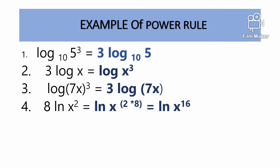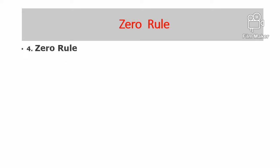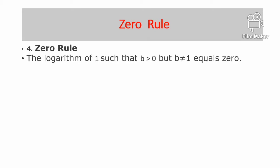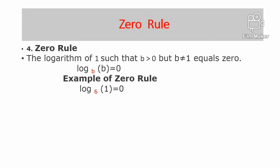Number 4: Zero Rule. Logarithm of x squared equals 0, where b is not equal to 1, it equals 0. Logarithm base b of 1 equals 0. Example: Logarithm base 6 of 1 equals 0. Logarithm base 10 of 1 equals 0.